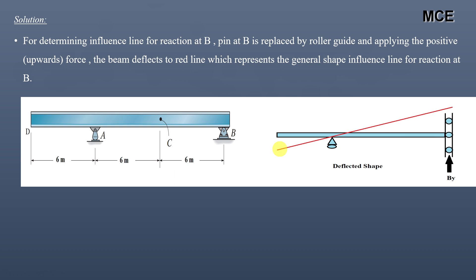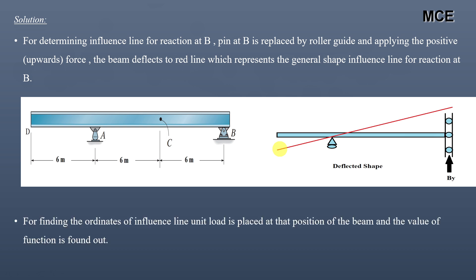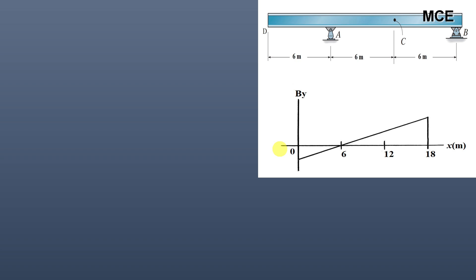To find the ordinates of this influence line, we place a unit load at the position of the beam where we want to find the ordinate, then calculate the value of the function. We need to find the ordinates at 0, 12, and 18 meters.